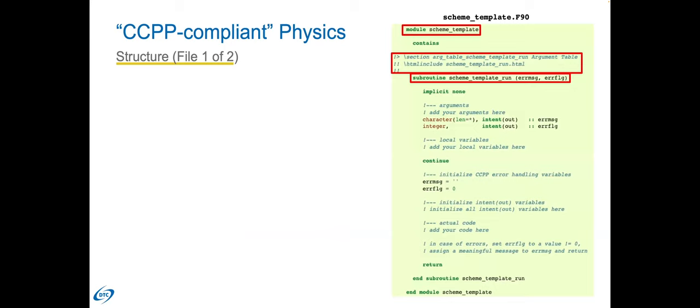Here's a short example of what a CCPP-compliant interface looks like. The code exists in a Fortran module that shares a name with the file. There's one subroutine that shares the same scheme root name and corresponds to one of the CCPP phases — scheme_template_run. Those Doxygen-formatted hook lines exist immediately before the subroutine. The rest of the code is just regular Fortran, and there are a few more rules we'll get to, but nothing else special about it.